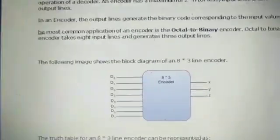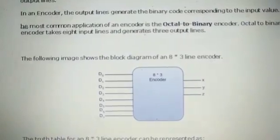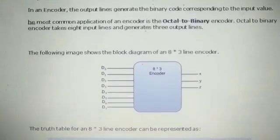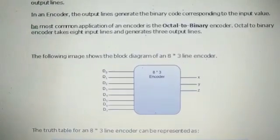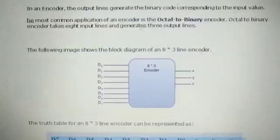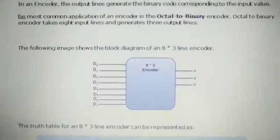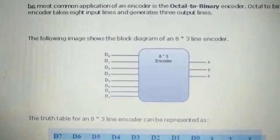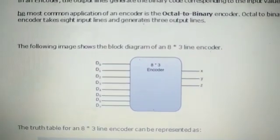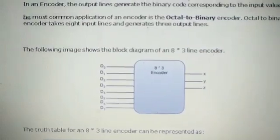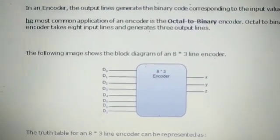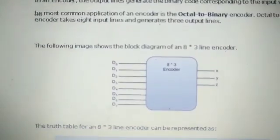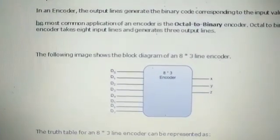This is the block diagram for an 8×3 encoder, just the opposite of a decoder. Previously in decoder it was 3×8, but here it's 8×3 encoder. 8 is the number of inputs and 3 is the number of outputs. It converts from octal to binary, so it's an octal to binary encoder.